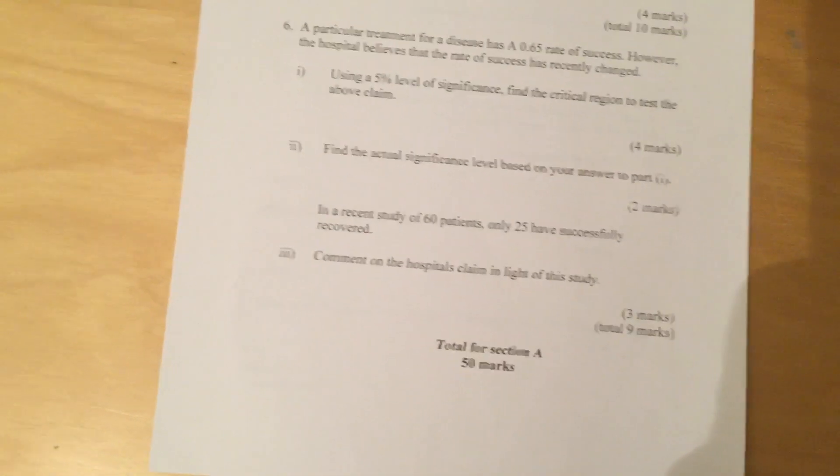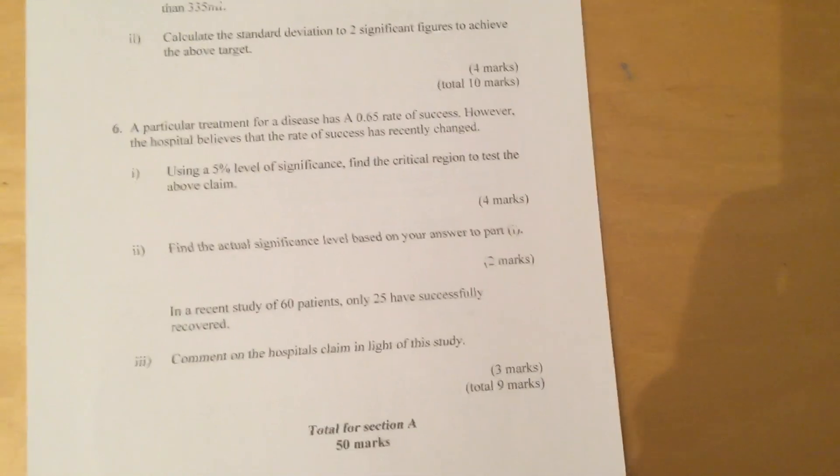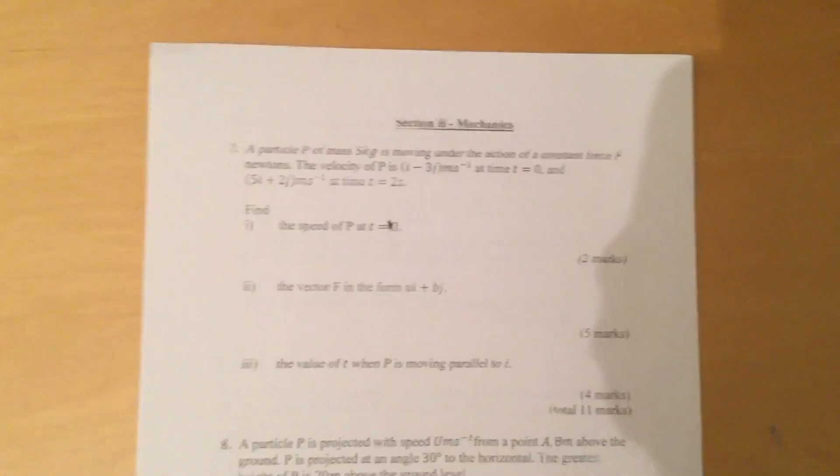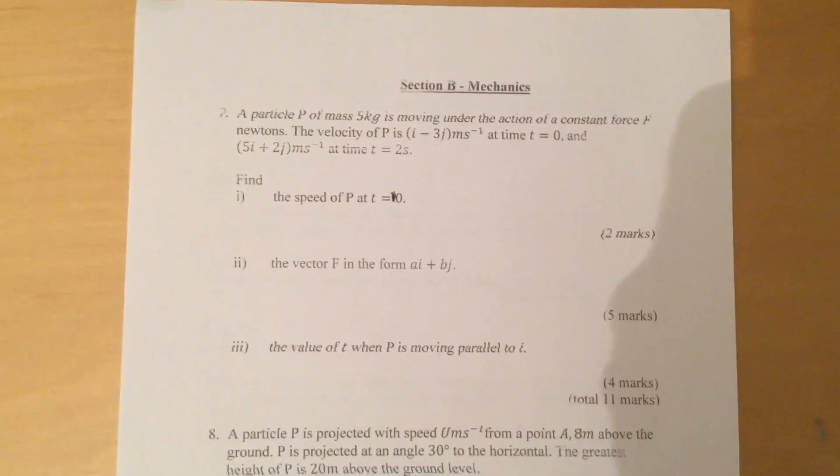The total for section A is 50 marks, and section B starts now. Section B is mechanics. This will be question 7.